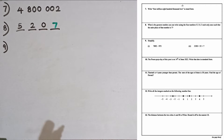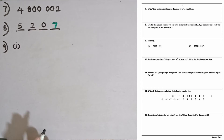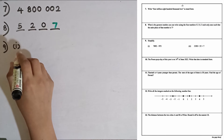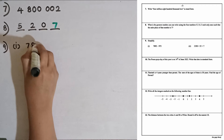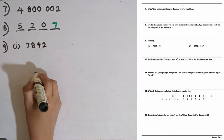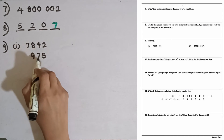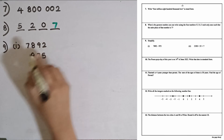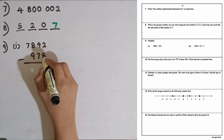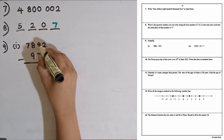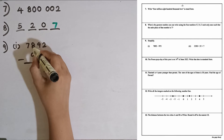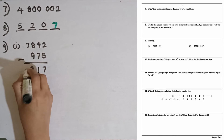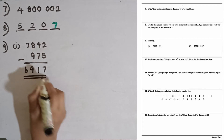Question number nine, first part: simplify 7,892 minus 975. Write the numbers with place values one below the other. 12 minus 5 is 7, then the remaining is 8, 8 minus 7 is 1, then 18 minus 9 is 9, and the remaining in this position is 6. So the answer is 6,917.